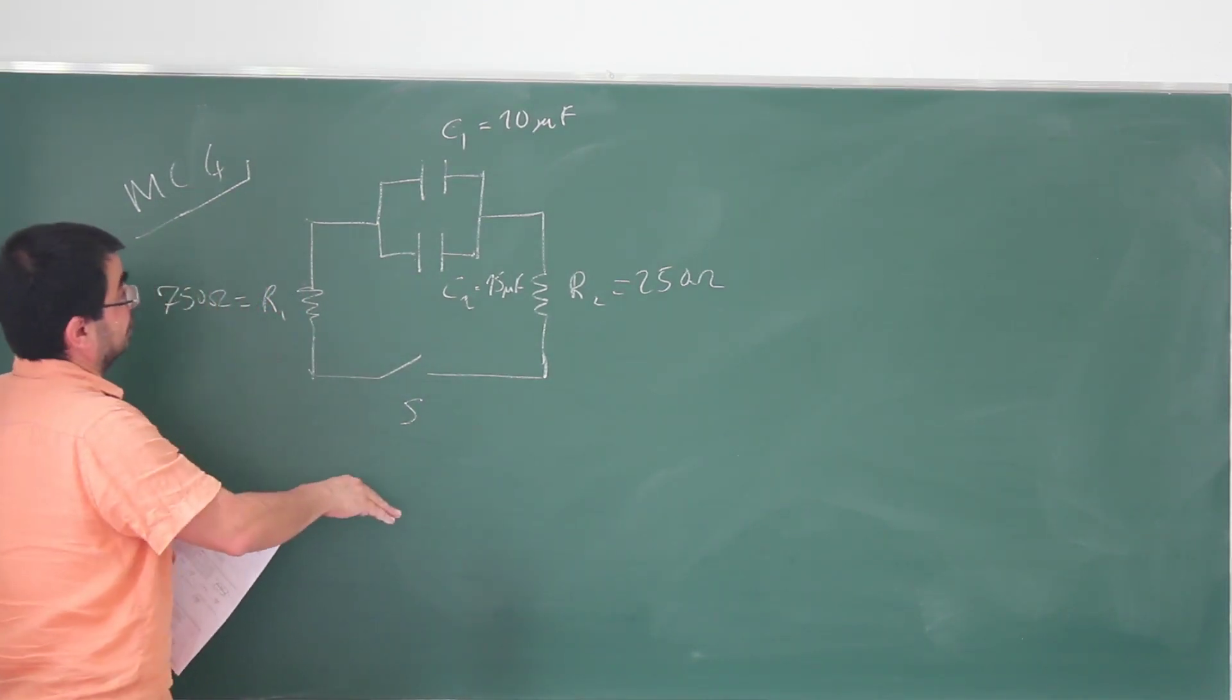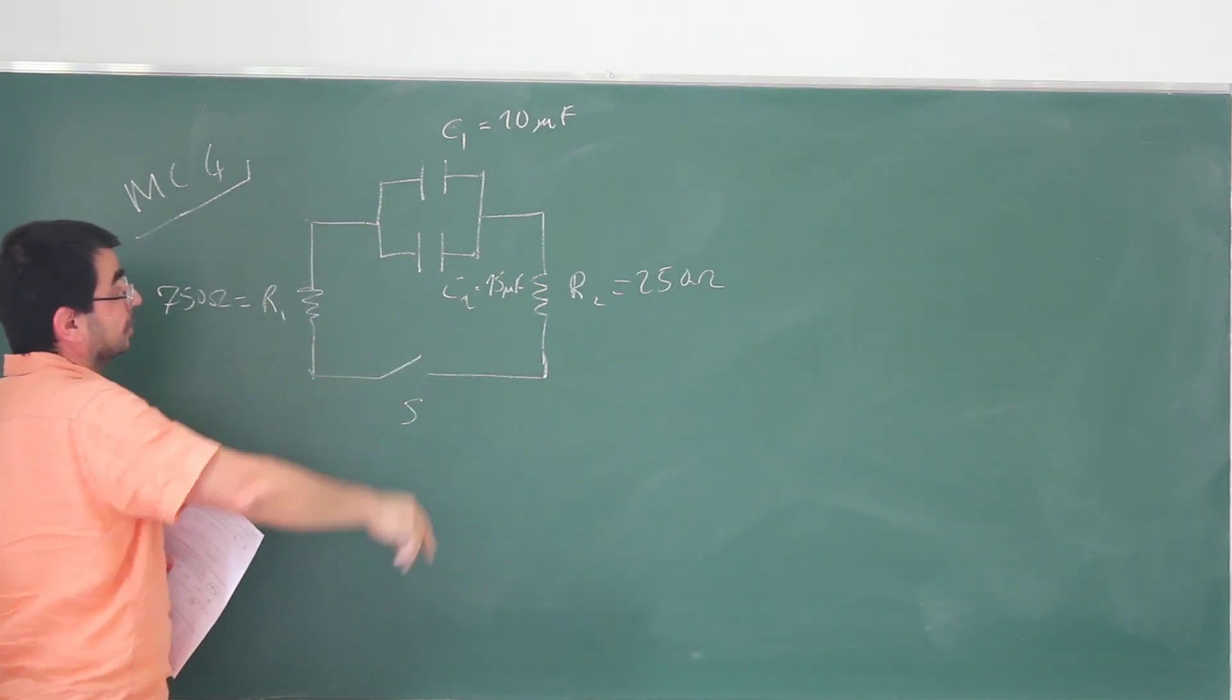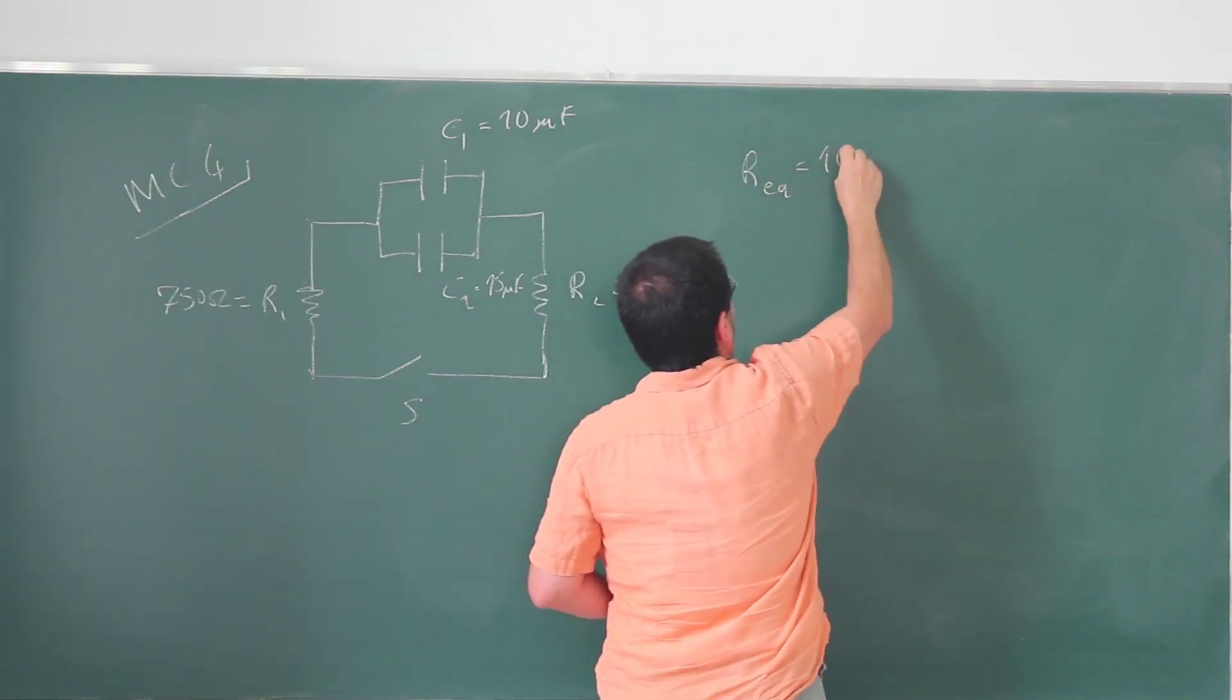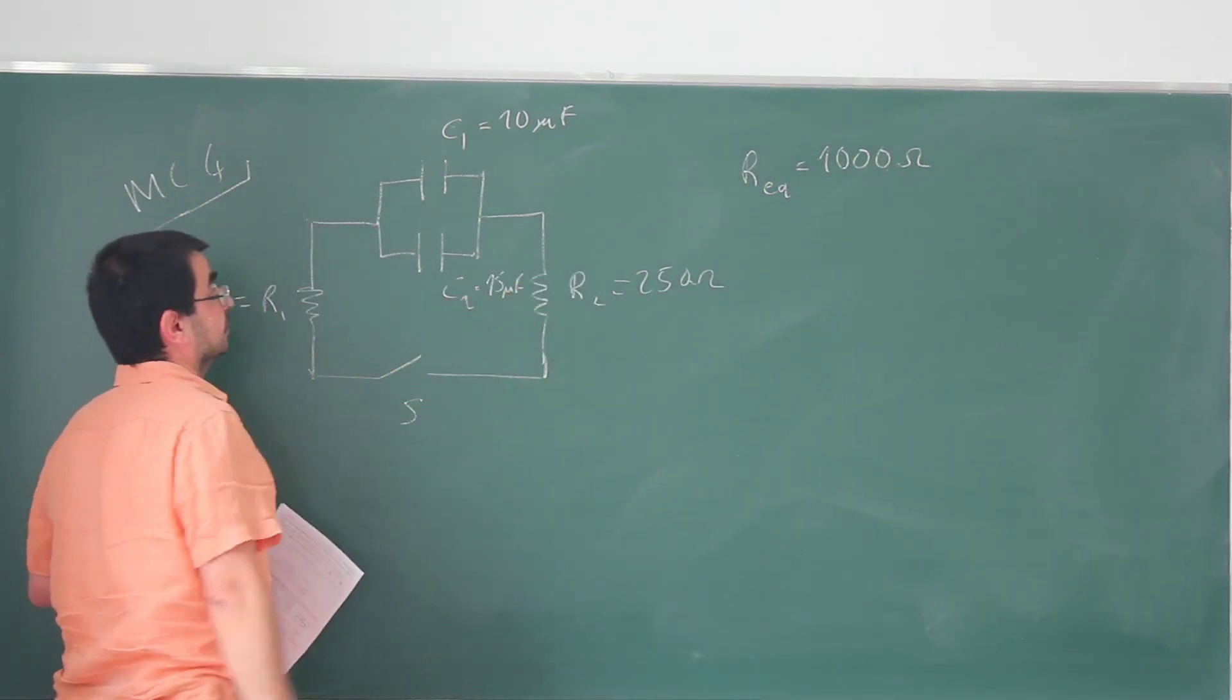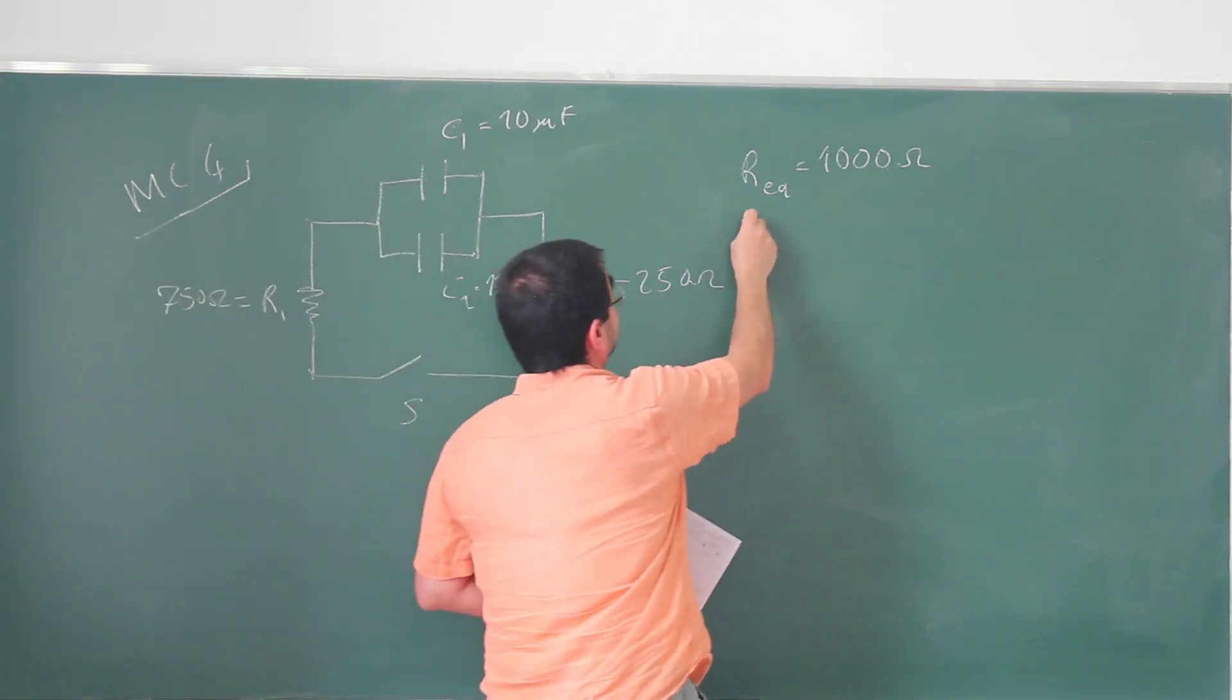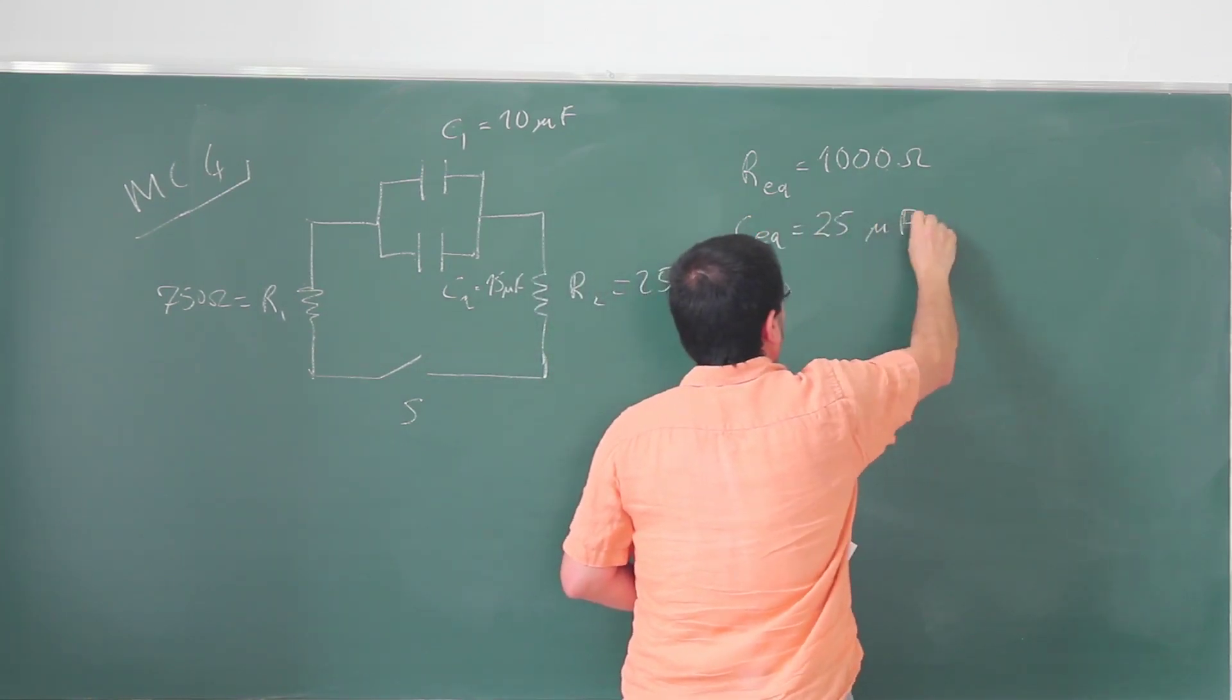When we close the switch, we are going to have some equivalent capacitance connected in series to some equivalent resistance, and we can calculate these. The equivalent resistance is 1000 ohms. These are connected in series, they have the same current, so 750 plus 250 is 1000. These are connected in parallel, they have the same potential difference, so the equivalent capacitance is 25 microfarads.